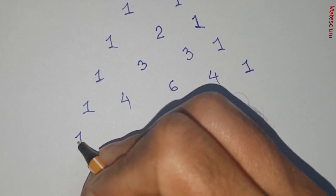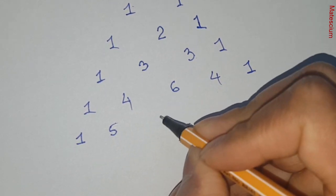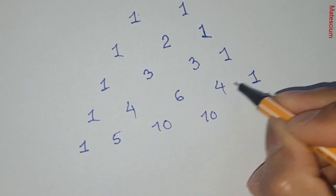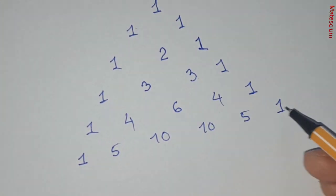I'm expanding one more step further ahead. One, one plus four is five, four plus six is ten, four plus six is again ten and four plus one is five and this is one. So now it is getting a perfect triangle.